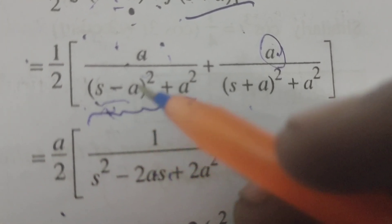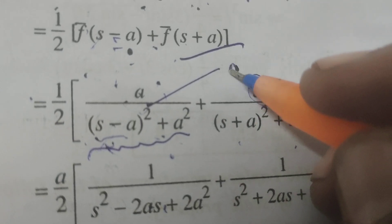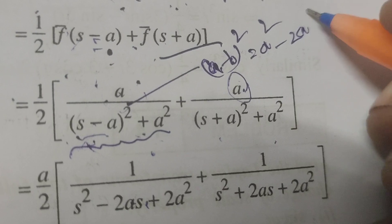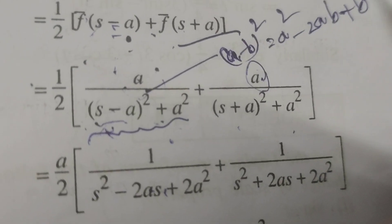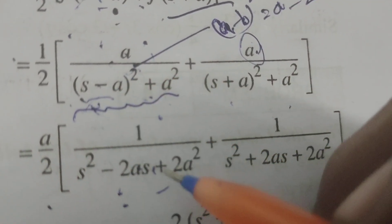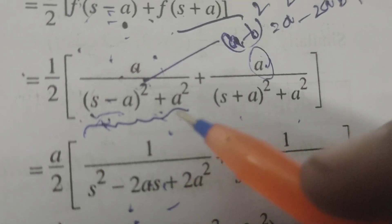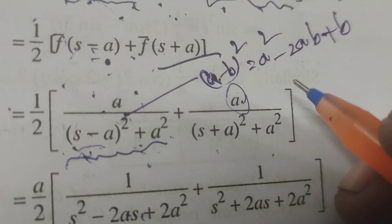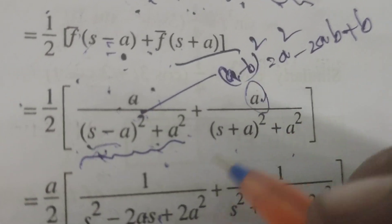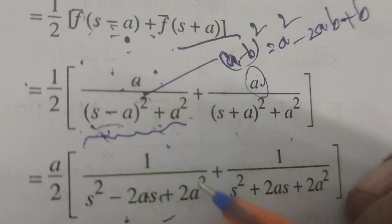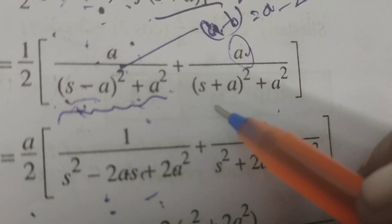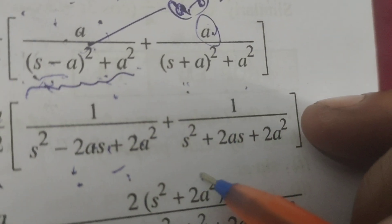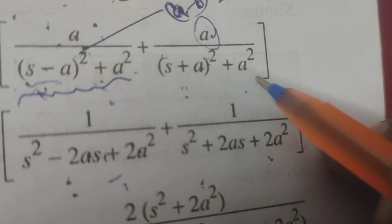Expanding (s-a)²: using the formula (a-b)² = a² - 2ab + b², we get s² - 2as + a², so s² - 2as + 2a². Similarly, expanding (s+a)²: s² + 2as + a², giving s² + 2as + 2a².